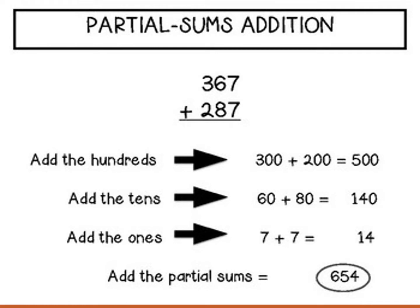367 plus 287. We need to add using partial sums. Look at the addends. Add the hundreds first: the first addend has 300 and the second addend has 200. 300 plus 200 equals 500. After that, add the tens: the first addend has 60 and the second addend has 80. 60 plus 80 equals 140. After that, add the ones: 7 plus 7 equals 14. Now add all the sums: 500 plus 140 plus 14, and you will find 654.